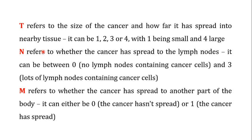The M refers to metastasis — whether the cancer has spread to another part of the body — and it has two values: 0 means the cancer hasn't spread to other parts of the body, and 1 means it has. So to summarize: T ranges from 1 to 4, N ranges from 0 to 3, and M is either 0 or 1.